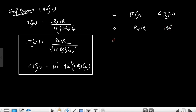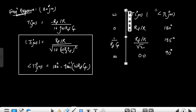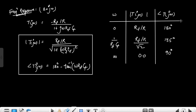For different values of omega: at zero frequency (ω = 0), the magnitude is Rf upon R and the angle is 180°. At ω = 1/(Rf·Cf), which is the pole frequency, the magnitude is (Rf/R) divided by root 2, and the angle is 135°. At infinite frequency, the magnitude goes to zero and the angle becomes 90°. As frequency increases, the magnitude decreases — this is a low-pass filter characteristic.